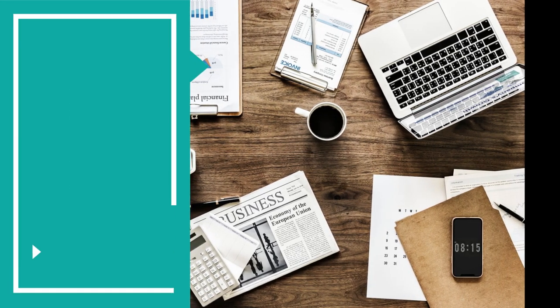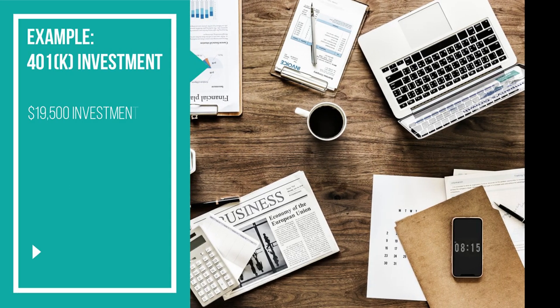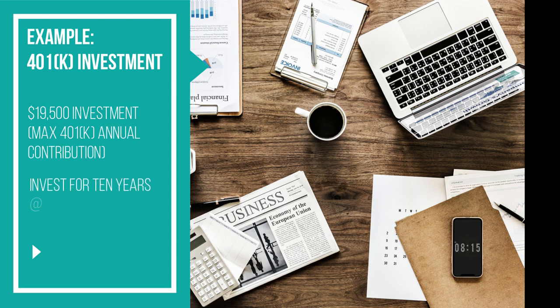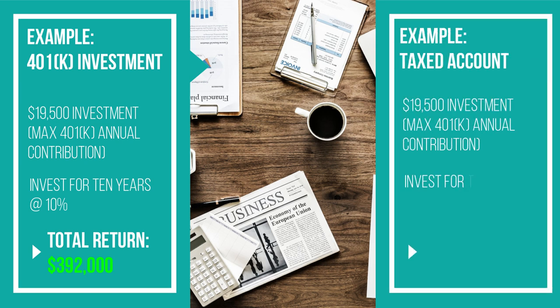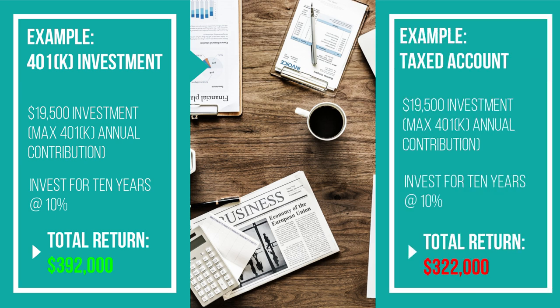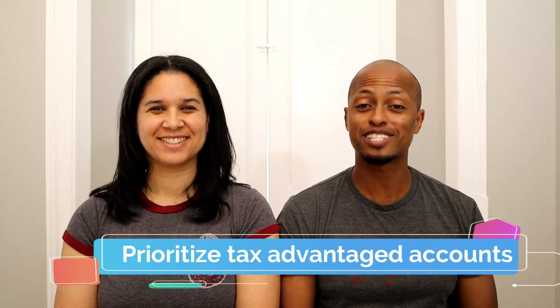For example, if you invest the max 401k annual contribution of $19,500 into your 401k and add that same $19,500 each year, the 401k account returning 10% tax free for 10 years would be worth $392,000. But that same contribution to a non-retirement taxable account will only grow to $322,000 if you're in the mid tax bracket. So over a 10-year period, you make $70,000 more in a tax deferred account than a taxable account — for the same period and the same amount of money.